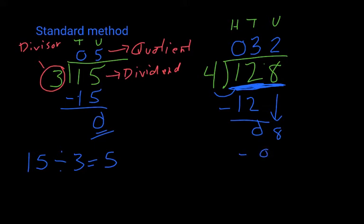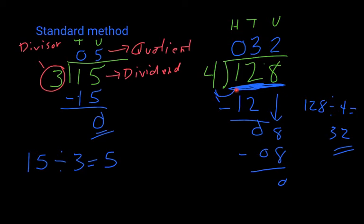How many times does 4 go into 8? It goes twice. That leaves zero, so our quotient is 32 — meaning 128 divided by 4 equals 32 with no remainder. Remember, you start by looking at the first digit, then the first two digits, and so on as you work through the dividend.